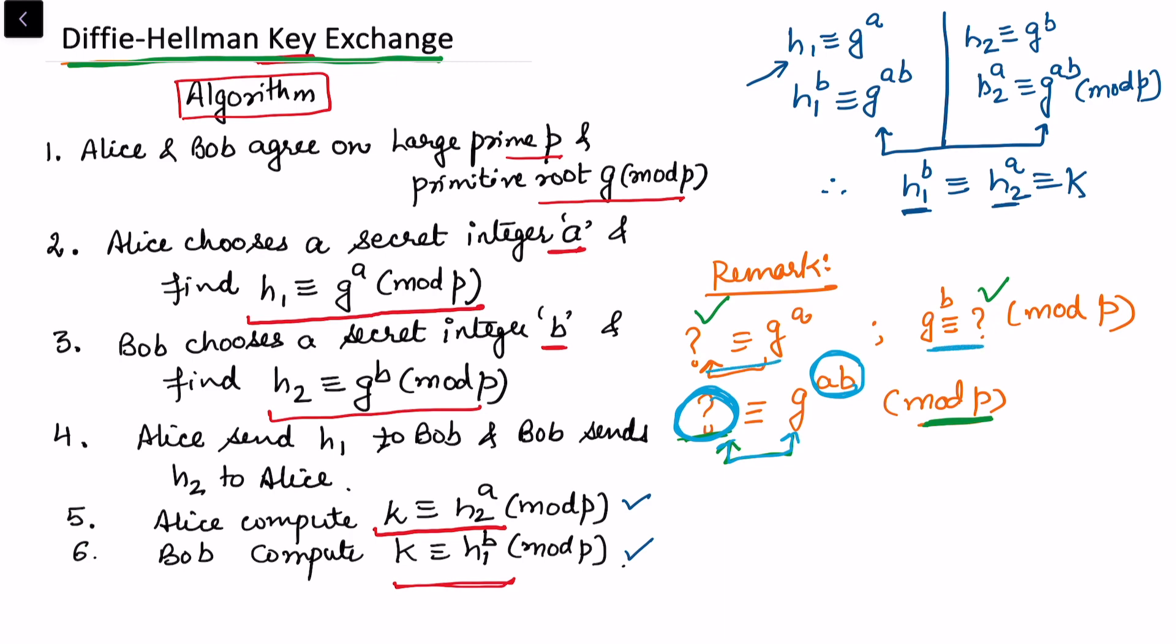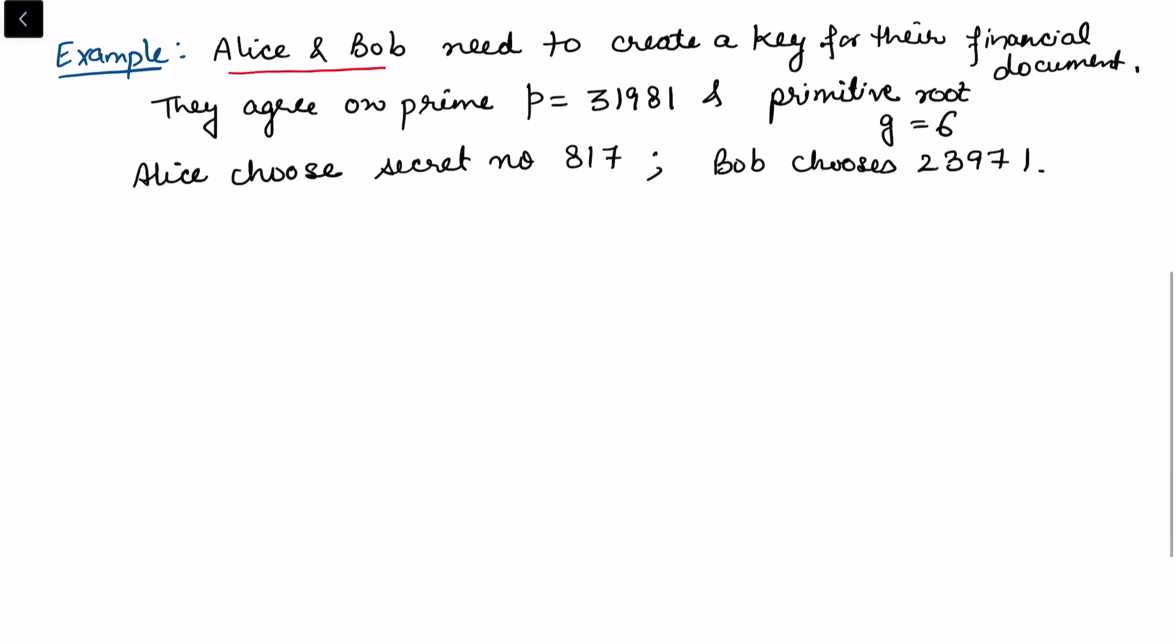Let's take an example for this algorithm. Alice and Bob need to create a key for their financial document. They agree on prime p equals 31981 and primitive root g equals 6. Alice chooses secret number 817, and Bob chooses 2697.